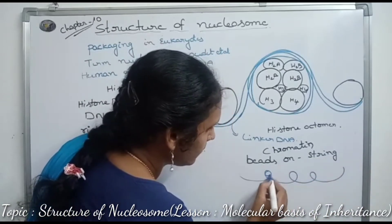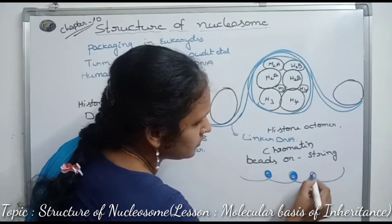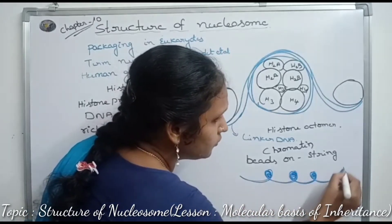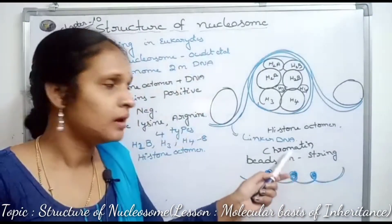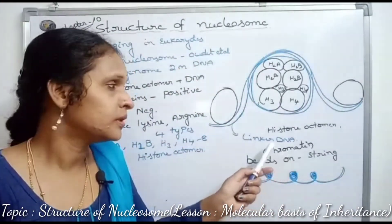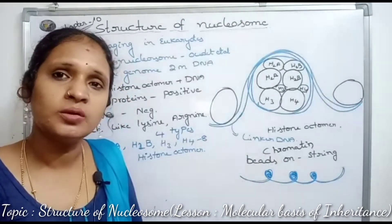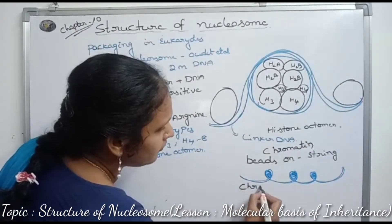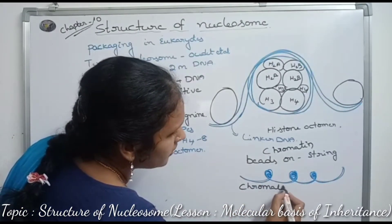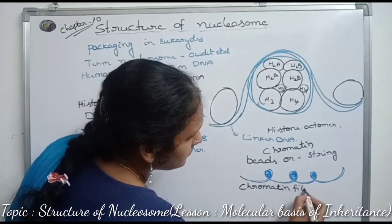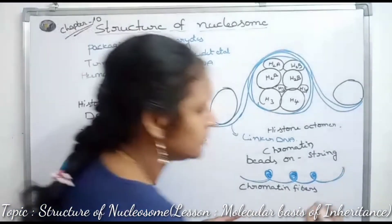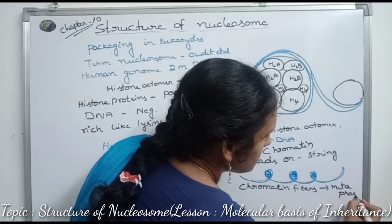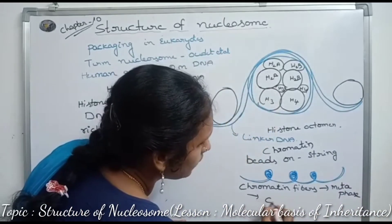The nucleosome repeating units form the beads-on-string structure observed under an electron microscope. This chromatin structure is further coiled to form chromatin fibers. At the stage of metaphase in cell division, these chromatin fibers form chromosomes.